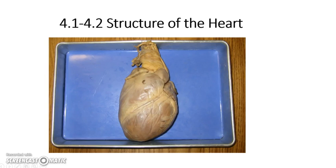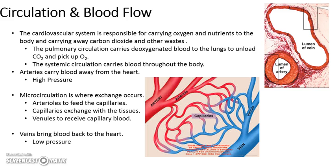This is your front load for activities 4.1 through 4.2: structure of the heart and blood flow. The circulation in the body is done through the heart. It helps with blood flow, and the cardiovascular system is responsible for carrying oxygen and nutrients. It's very important to understand how the heart works in conjunction with the lungs to carry deoxygenated and oxygenated blood throughout the body to supply oxygen to the cells.